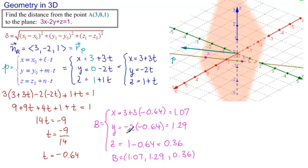So now we have two points, and we can use our distance formula. Delta equals giant square root. And we have, we're going to use this as our base point. So 1.07 minus 3 squared, plus 1.29 minus 0 squared, plus 0.36 minus 1 squared. Get out our calculator again.